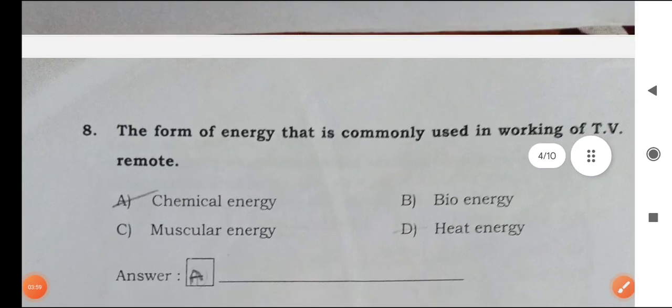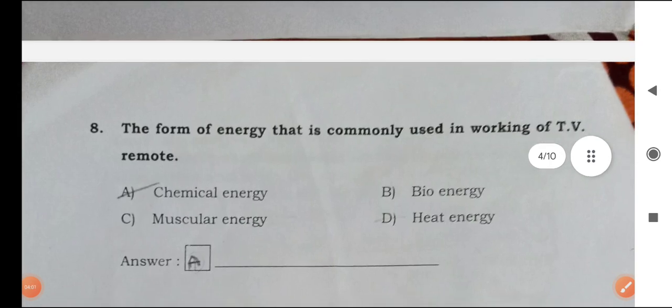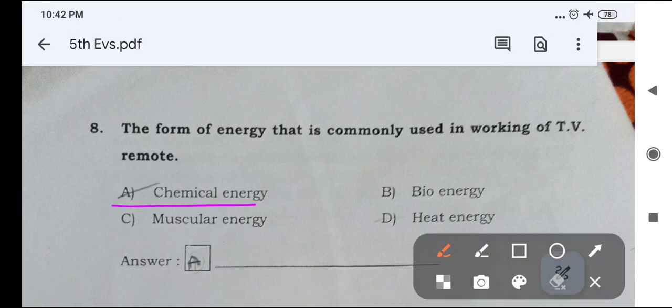Next one, the form of energy that is commonly used in working of TV remote. Which energy? It is chemical energy. Because it has remote cells inside. So, it is chemical energy.